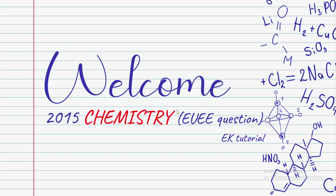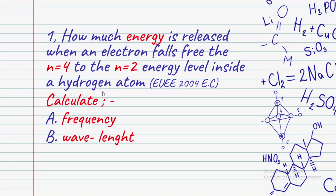Welcome to 2015 chemistry, math request from EK tutorial. How much energy is released when an electron falls from energy level 4 to energy level 2 inside a hydrogen atom? Calculate the frequency and wavelengths. We need just frequency and wavelengths — the energy level release.